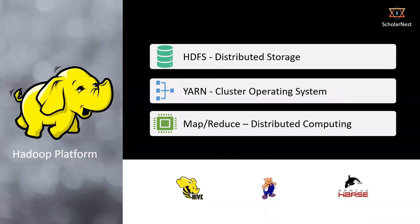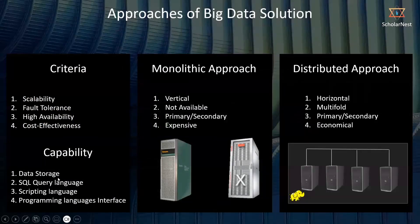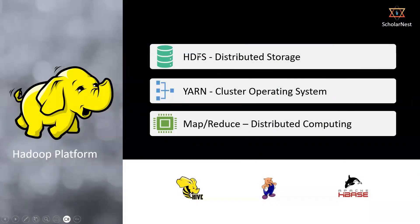In the beginning, Hadoop offered three main components within the platform. The first component is known as HDFS — Hadoop Distributed File System — which offers distributed storage to fulfill the data storage requirement. The system was supposed to store data like data warehouses, so they came up with one component of the Hadoop system to store the data.